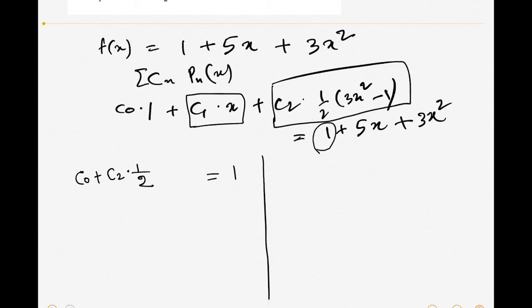Plus c₂ times ½ times -1. So we see that we can calculate c₀ once we know c₂. But to know c₂, we see that this term involves x², so we will compare the coefficient of x² on both sides.